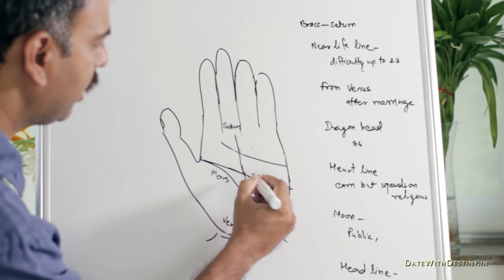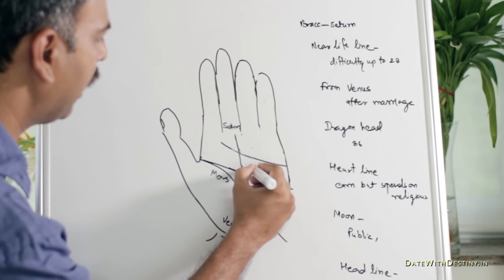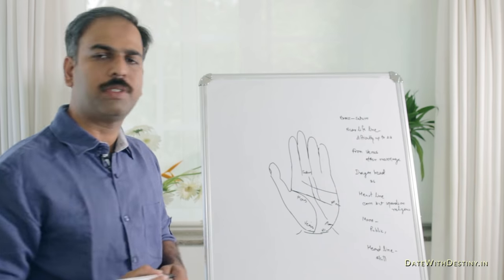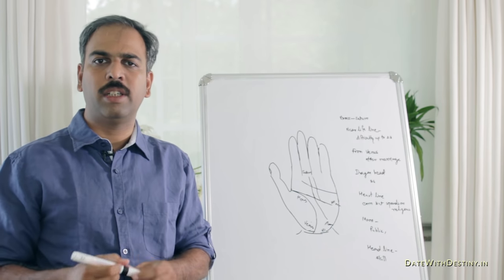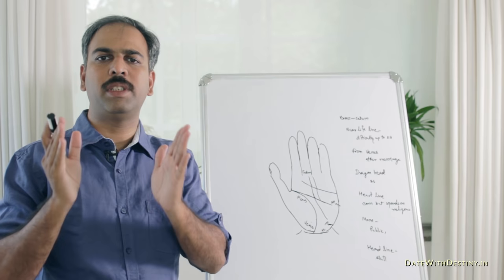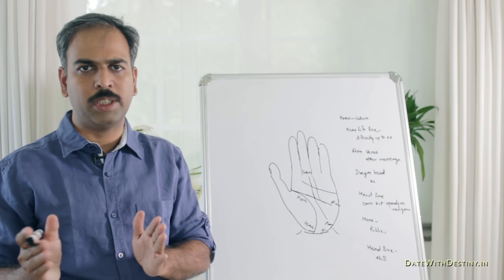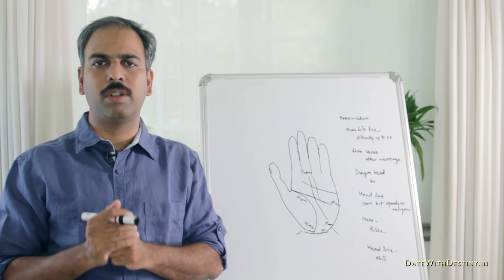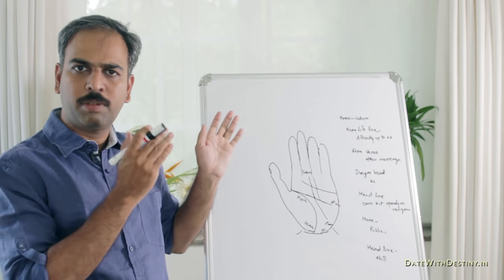Then, the last one. If the line starts from the Head Line and goes to the Mount of Saturn, then the person with his study has a good skill. And with the help of this skill, he earns a lot of money. This is the Indian point of view towards the Fate Line.